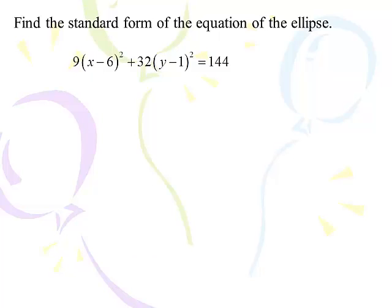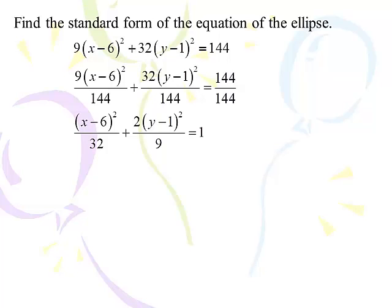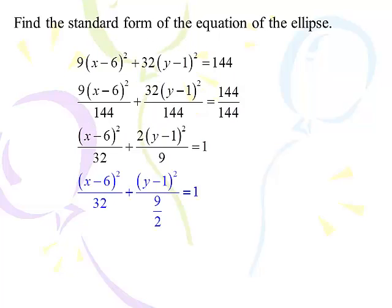Here's one that's mostly factored — divide both sides by 144. The x-term gives 32 in the denominator. The y-term reduces to a fraction: 2/9 in the numerator becomes 9/2 in the denominator. So a² = 32 and b² = 9/2. It's a bit nasty, but this is valid standard form — you can see a² and b² clearly.